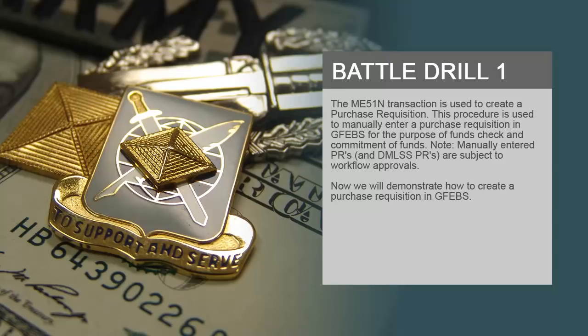The ME51N transaction is used to create a purchase requisition. This procedure is used to manually enter a purchase requisition in GFIBS for the purpose of funds check and commitment of funds. Manually entered PRs and DMLSS PRs are subject to workflow approvals. Now we will demonstrate how to create a purchase requisition in GFIBS.